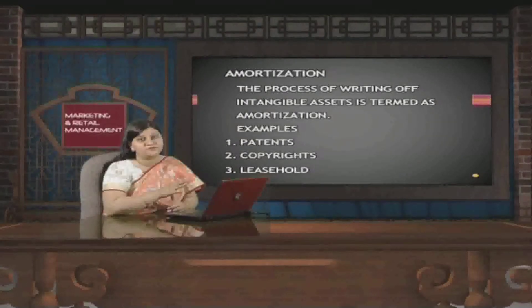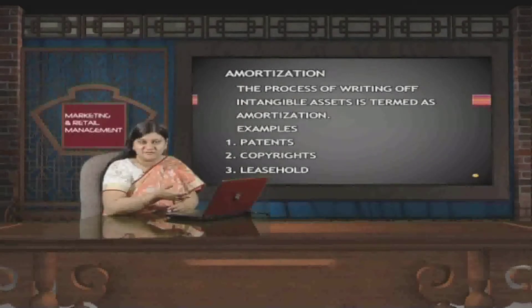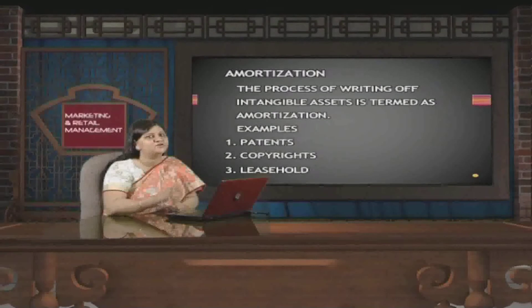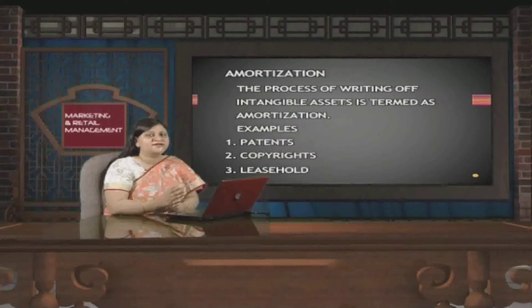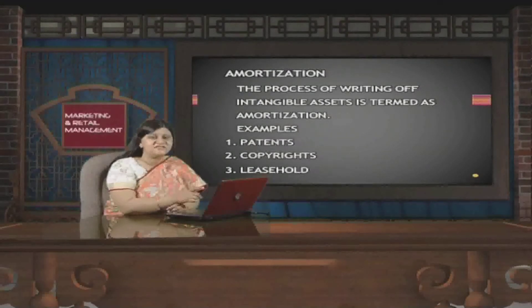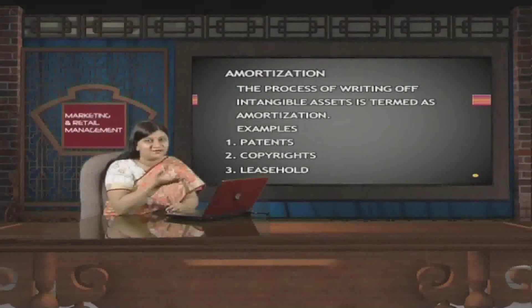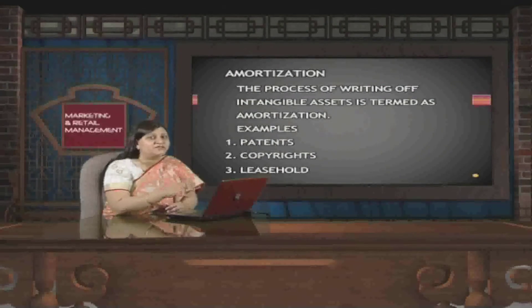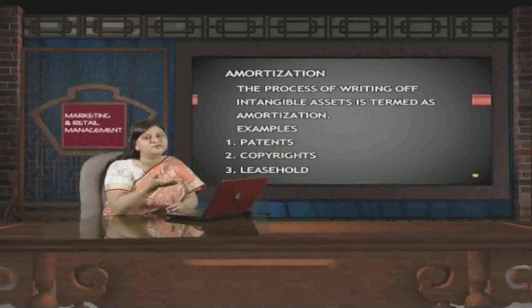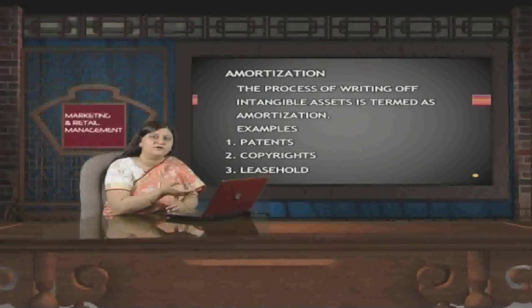For intangible assets, we use the amortization method of reducing their value. We will write off a certain amount each year to reduce those assets over the economic life or the period for which the asset is being used. The clear demarcation is: where tangible assets are there, we use depreciation; where intangible assets are there, we use amortization; and where natural irreplaceable resources like coal mines are involved, we use the depletion method.